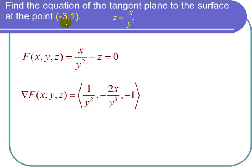Notice if I have the point negative 3 comma 1 and I plug it into x over y squared, x is negative 3, y is 1, I get negative 3 over 1 squared is negative 3. So z is negative 3.